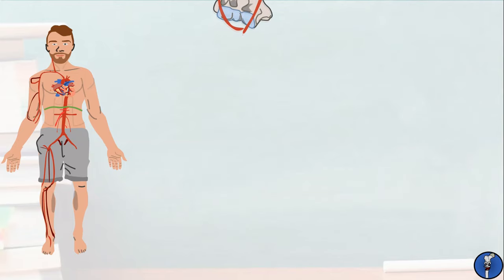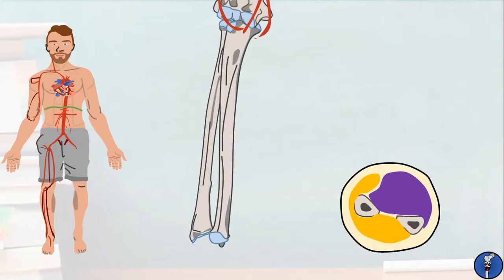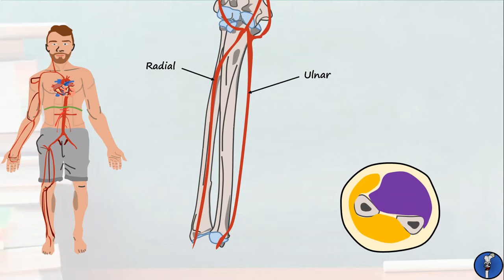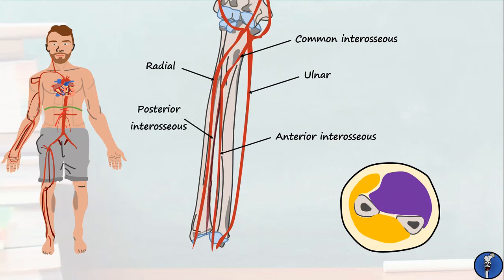In the forearm, the brachial and superior ulnar collateral arteries join to produce the ulnar artery, which supplies blood to a lot of the anterior compartment of the forearm. On the lateral side, the radial recurrent artery joins the brachial to produce the radial artery, which mostly helps to supply blood to the posterior compartment. Eventually, the radial and ulnar arteries join in the hand to produce the deep and superficial palmar arches. From the ulnar artery comes the common interosseous, which branches into anterior and posterior divisions. These sit either side of the interosseous membrane, between the ulna and radius, and mostly supply the posterior compartment.